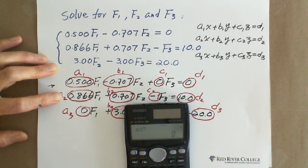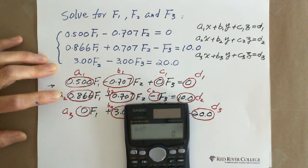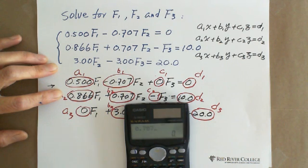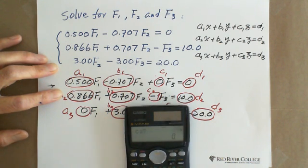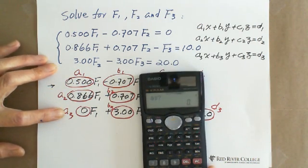Then go to A2. A2 is 0.866, enter. B2 equals 0.707, enter. C2 equals negative 1, enter. D2 equals 10, enter.